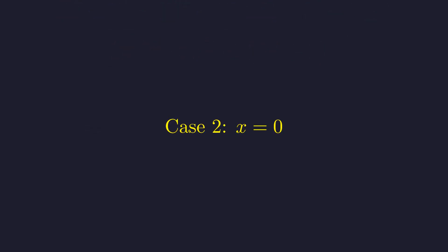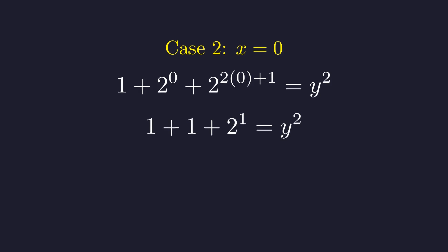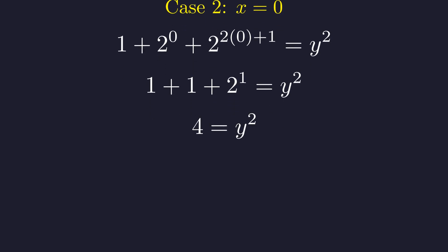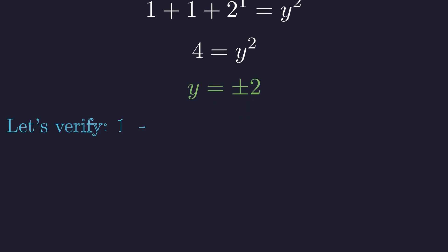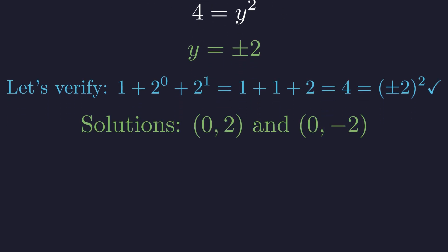Next, let's check the simplest non-negative case, when x equals 0. Substituting x equals 0 into our original equation, we get 1 plus 1 plus 2. This simplifies nicely to 4 equals y squared. Taking the square root gives us y equals positive or negative 2. Let's double-check this works in our original equation. Indeed, 1 plus 1 plus 2 equals 4, which is 2 squared. So, we've found our first two pairs of solutions.